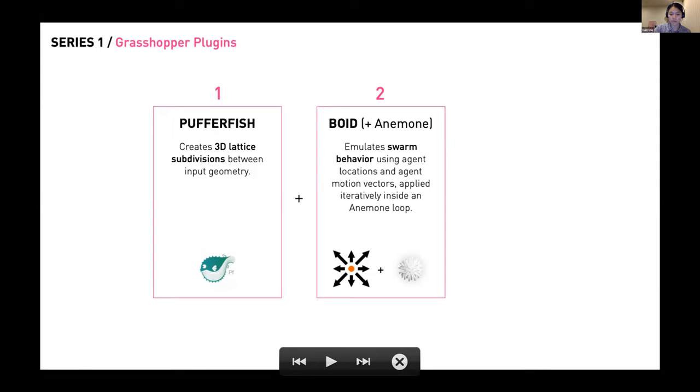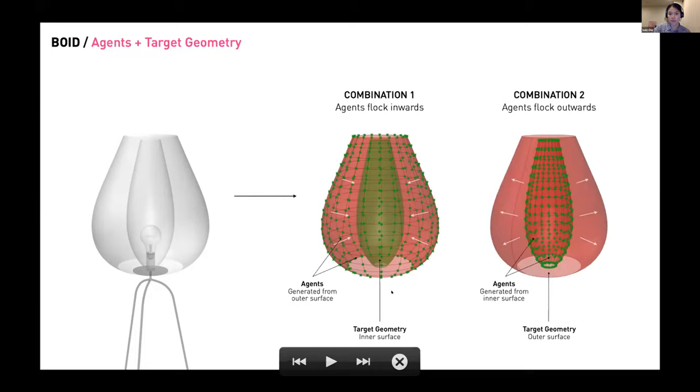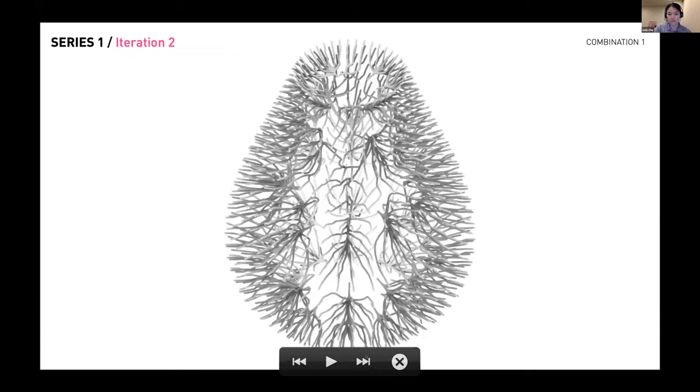Pufferfish generates 3D lattice subdivisions between input geometries and Boyd emulates swarm behavior. The two swarm behavior motion vectors I use were adhere, where agents move towards each other in pre-specified group numbers, and also stick where you can reference the geometry for agents to move towards. I had to set up combinations of agents and reference geometries to stick to. In the first combination, the agents are generated from the outer surface and then they would flock inwards to stick to the inner surface and combination two is the other way around. These are the geometries, the lampshades that were generated.